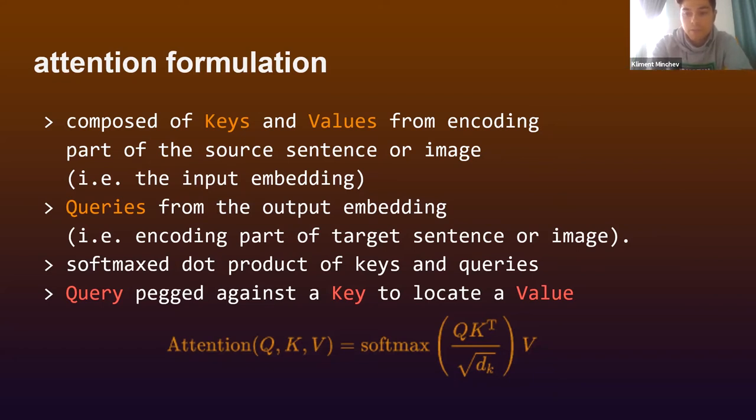As far as intuition goes, values are what is most interesting in the source—what are the keywords in the sentence or objects in the image. Keys are the indexes that address those values, much like a dictionary data structure. Each key has an associated value. Queries are built by the encoder of the target sentence or image and prompt the network to find certain information—basically what we'll compare to, and we'll give some intuition when we explain the dot product and the softmax.